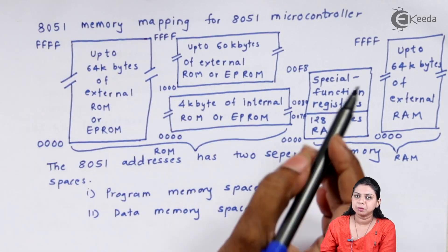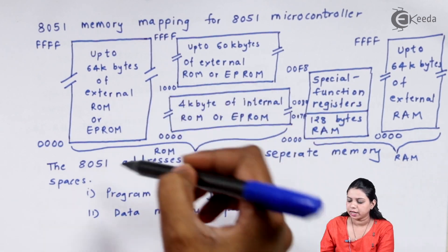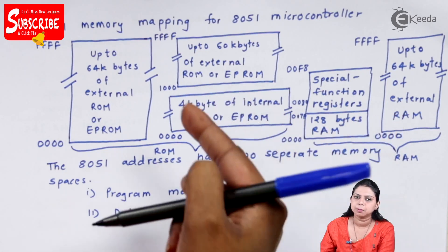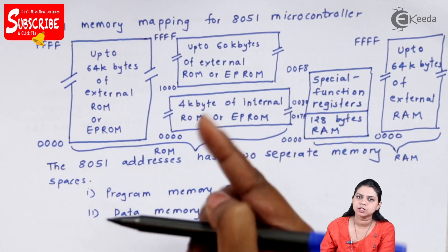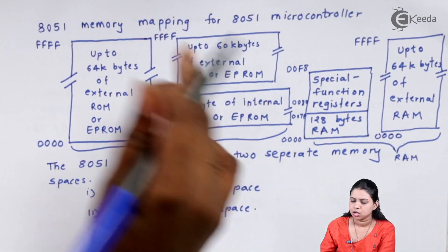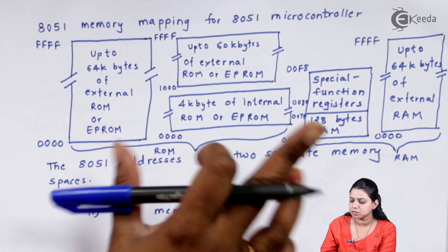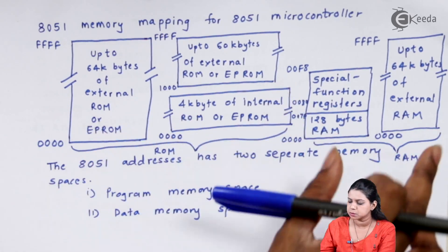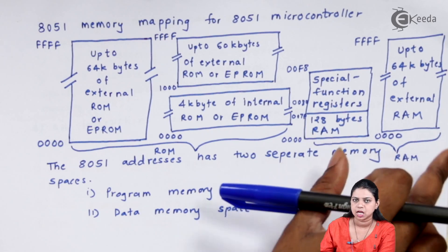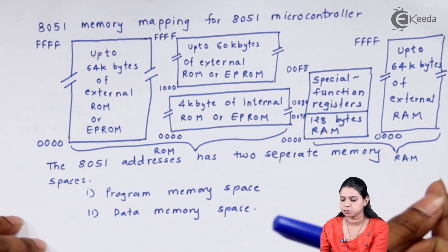This is the diagram of memory mapping of the 8051 microcontroller. The 8051 has two separate memory spaces: number one is called the program memory space, and number two is called the data memory space. We will now study what each of these memory spaces is.